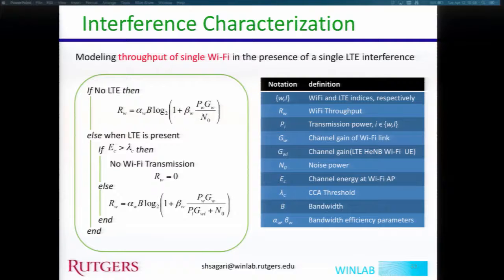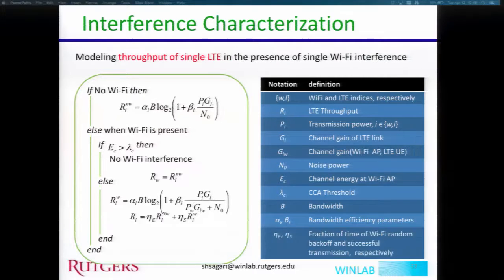Similarly we can model the throughput of a single LTE in the presence of a single Wi-Fi. When no Wi-Fi is present, LTE throughput is a function of SINR. When Wi-Fi is shut off due to LTE interference, there is no Wi-Fi interference and LTE throughput equals the no-Wi-Fi case. If Wi-Fi could transmit, then LTE throughput is a function of SINR with consideration of the Wi-Fi interference.